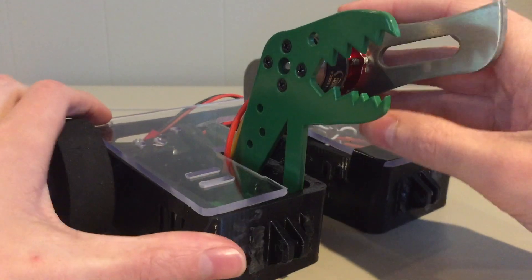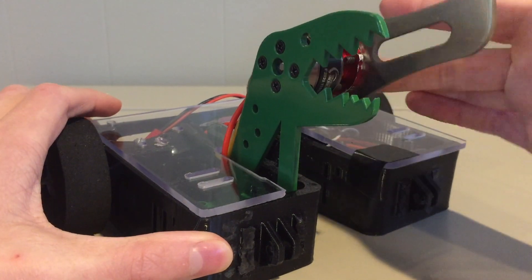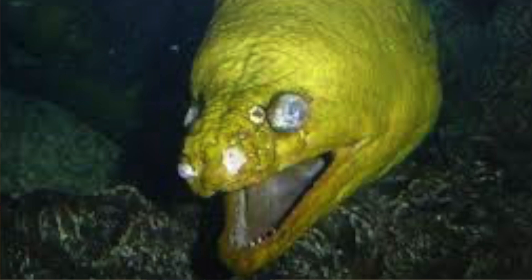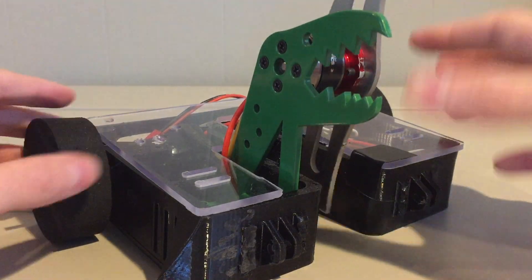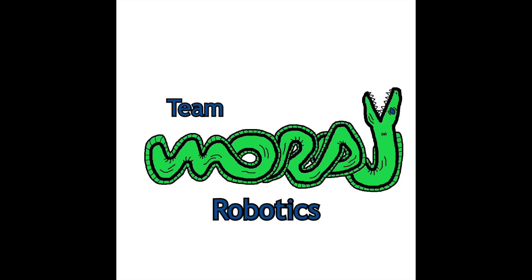To start off, it's called Moray because it's named after my favorite animal, Moray eels. Moray eels are just the coolest, cutest, and most terrifying animals you'll ever see. So that's why I named my robot and whole team after them.